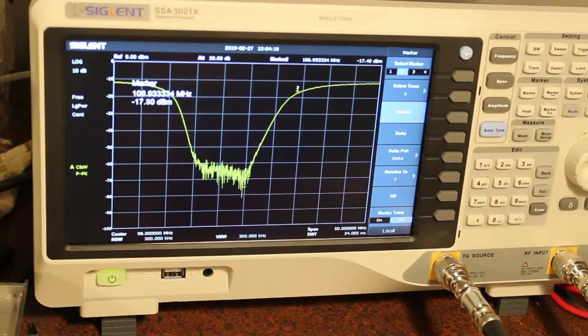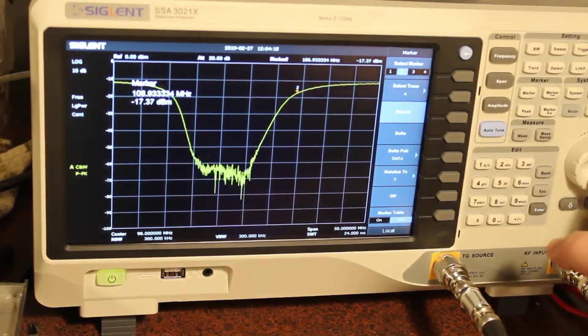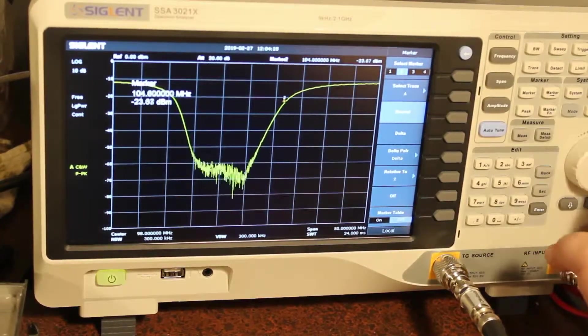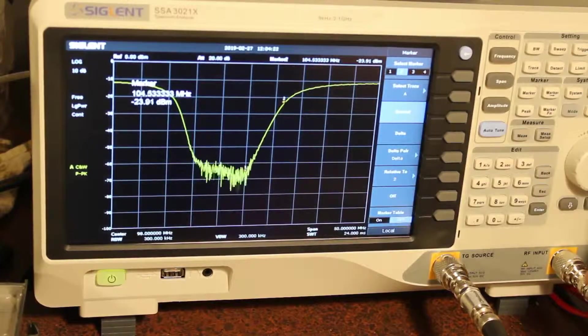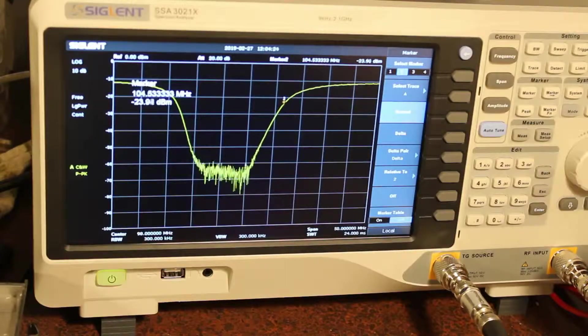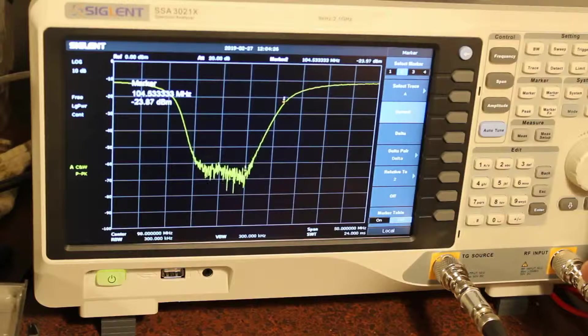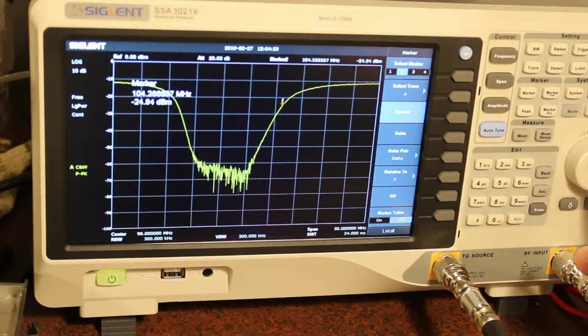So if we scroll back down here, 104, we're at about negative 23. So again, 13 dB below the injected signal.